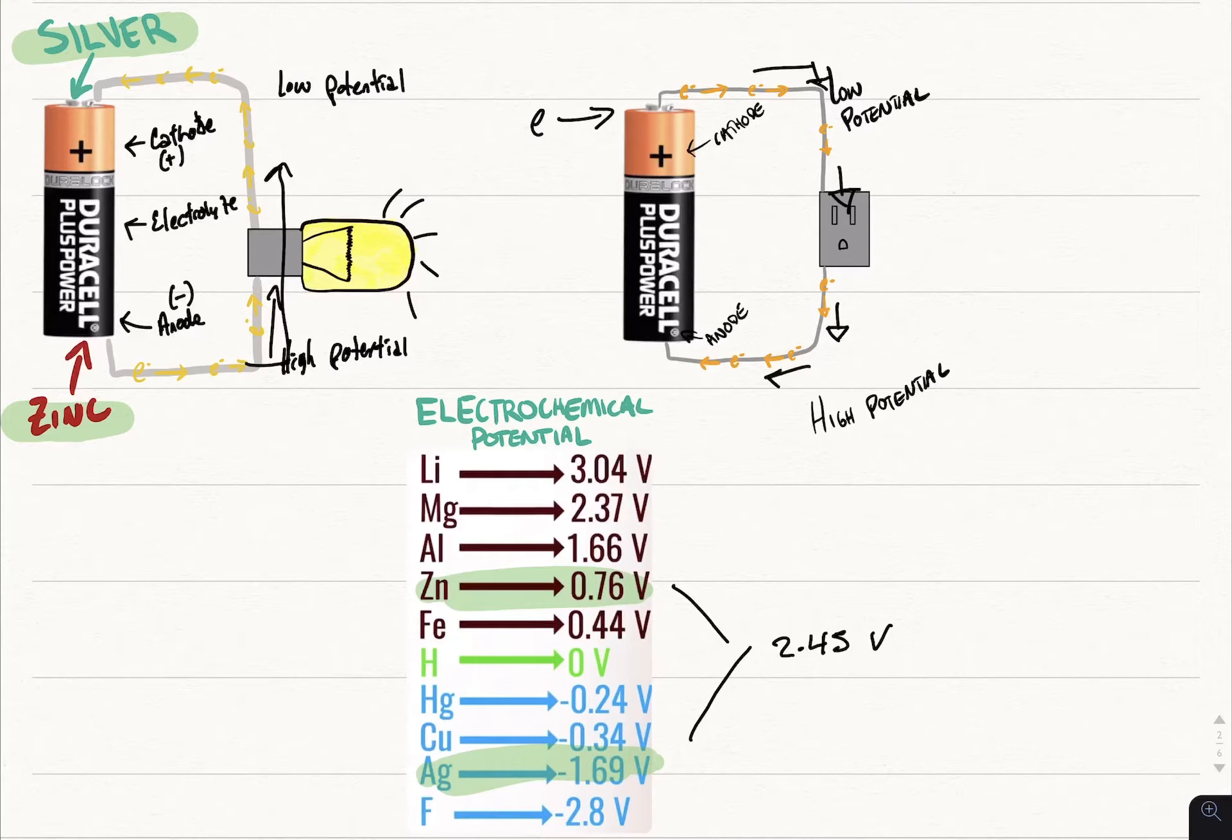Back to the electrochemical potential chart, lithium is the element with the highest electrochemical potential at 3.04 volts. That is why Tesla uses the lithium-ion battery.